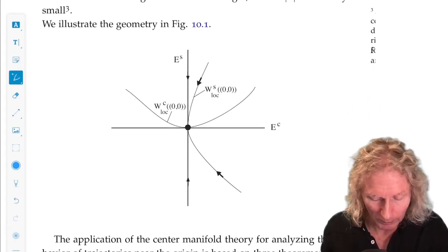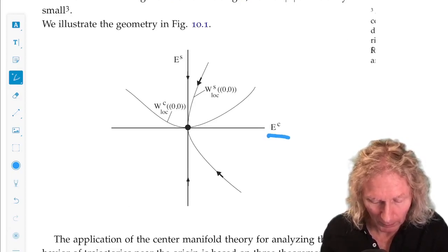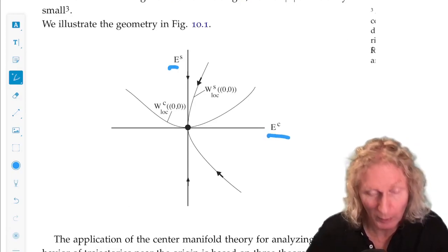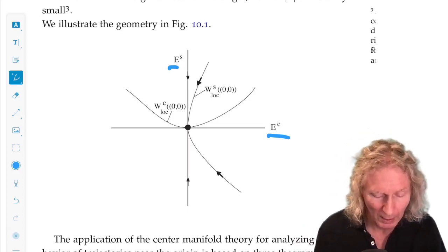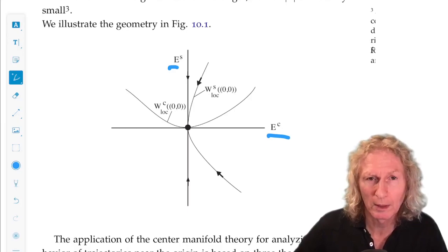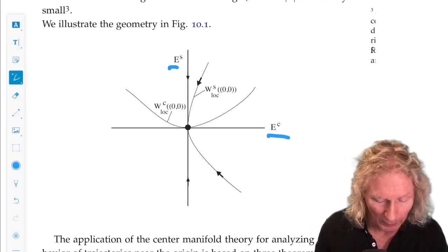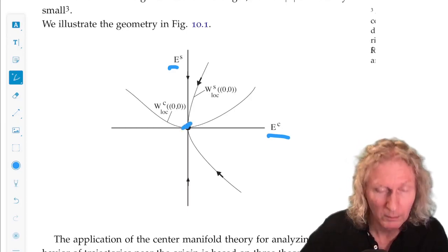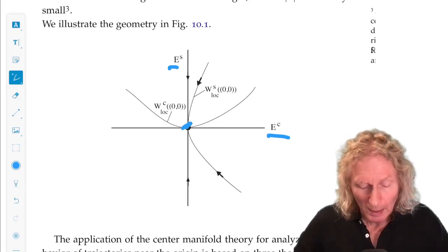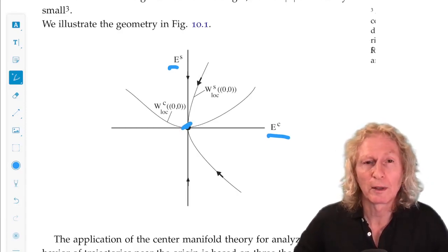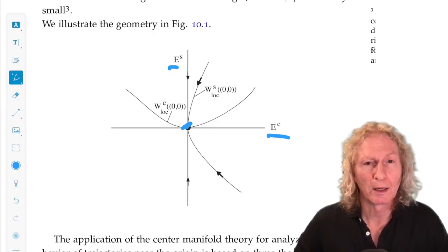And we have this picture. Our coordinate axes are the center subspace and the stable subspace. For the stable subspace, we already know what's going to happen. There exists an invariant manifold that passes through the origin, tangent to the stable subspace at the origin. Trajectories that start in it approach the origin at an exponential rate.